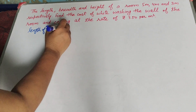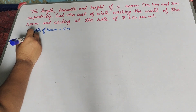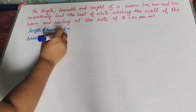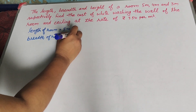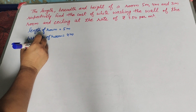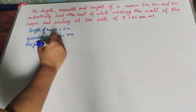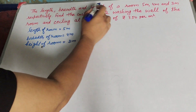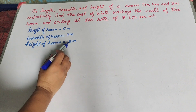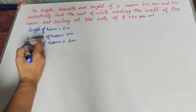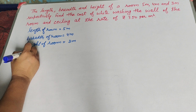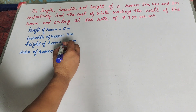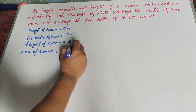Length of room is equal to 5 meter, breadth of room is equal to 4 meter, and height of room is equal to 3 meter. We need to find the cost of whitewashing the walls and ceiling. To find the cost, we need to find the area of the room. The room is in the shape of a cuboid.